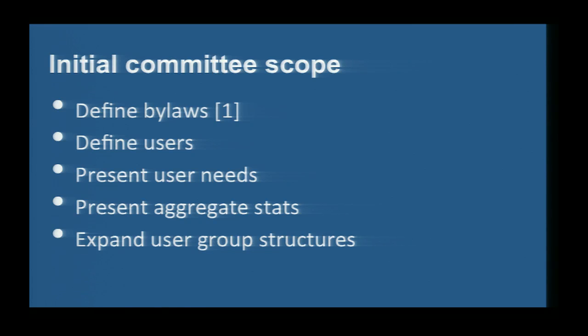The initial scope we're looking at: first, we're going to define the bylaws and the actual structure of the committee. Next, we're going to define the actual types of users we're going to be representing. Third, we're going to take information from users as a whole, aggregate this information, and present it with actionable proposals to the technical committee and the board of directors.